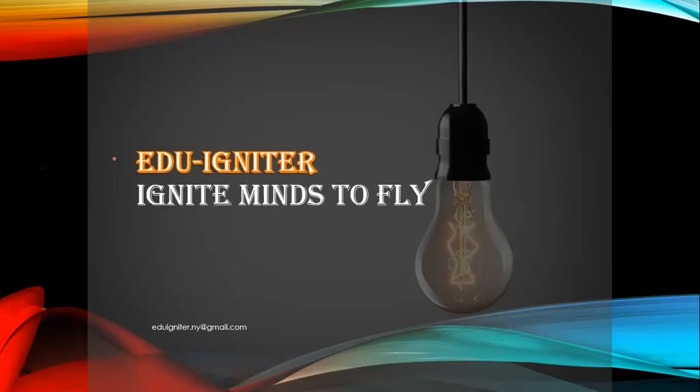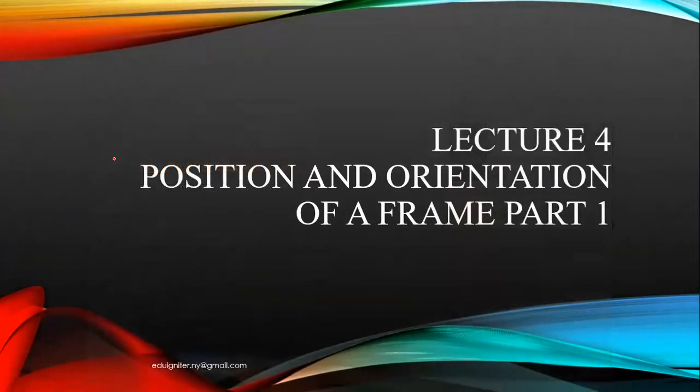Hello and welcome to AgUigniter. This is lecture number four on position and orientation of a frame. First we have to describe what position and orientation are. The position and orientation of a rigid body are the attributes to describe or specify the object in the coordinate system.